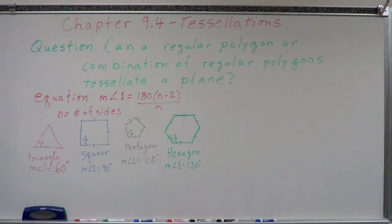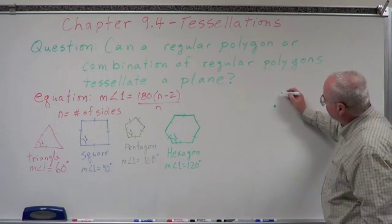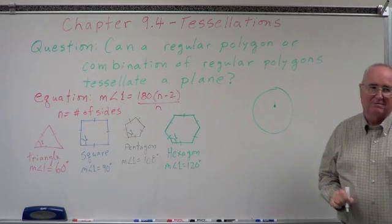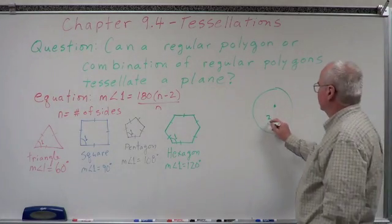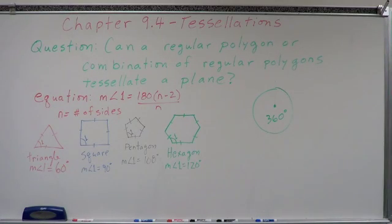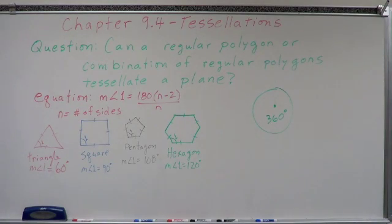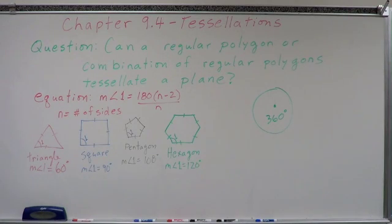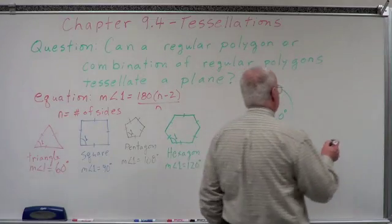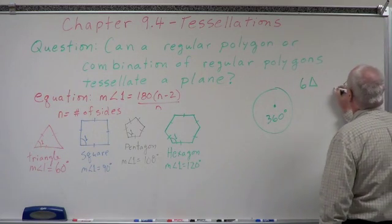At every vertex of a tessellation, the angles must sum to 360 degrees — a full rotation around that point. So we need interior angles that add up to exactly 360 degrees. Can we do that with equilateral triangles? 360 divided by 60 is 6. So we can put together 6 equilateral triangles to make that work.